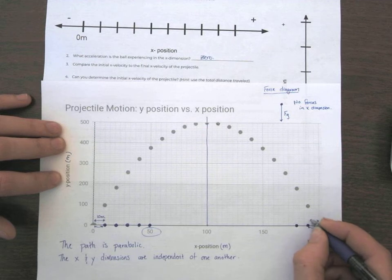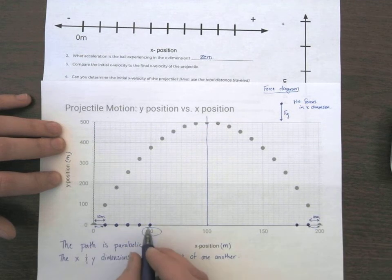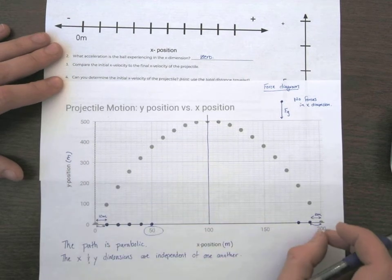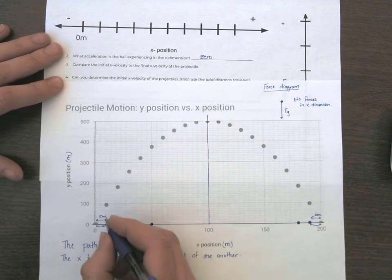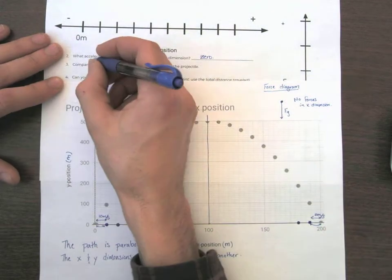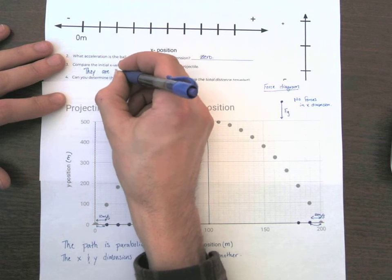We can check because in five seconds, it covered 50. So the initial velocity and the final velocity are 10 meters per one second. 10 meters per one second. So they are the same.